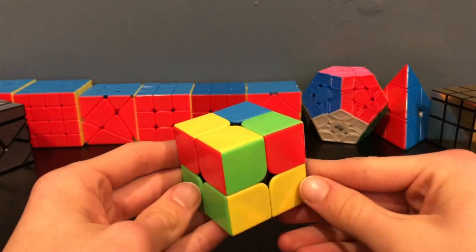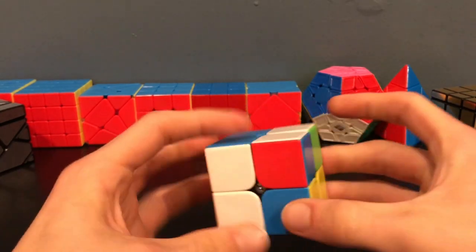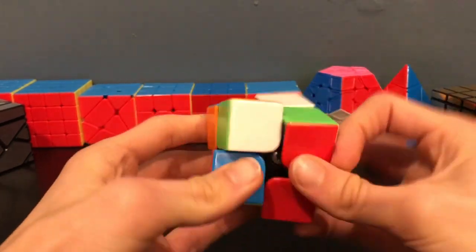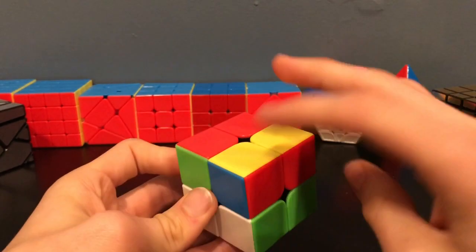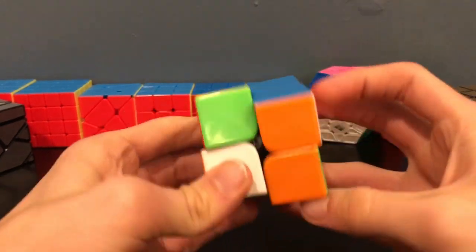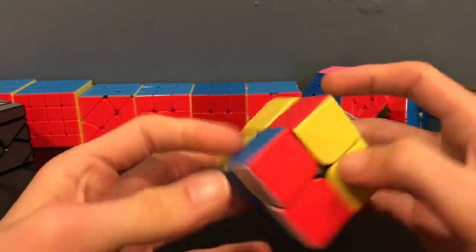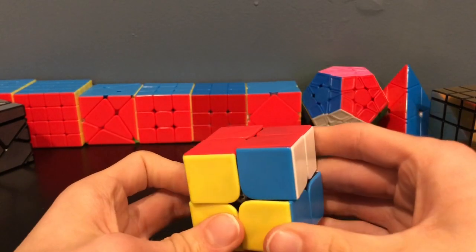For this last case, you will have to do three T-PERMs. So first, we will get these blinkers here, do a T-PERM, and then make these into facing up. And then we have this case, which we know will just do this, and then finish our OLL.